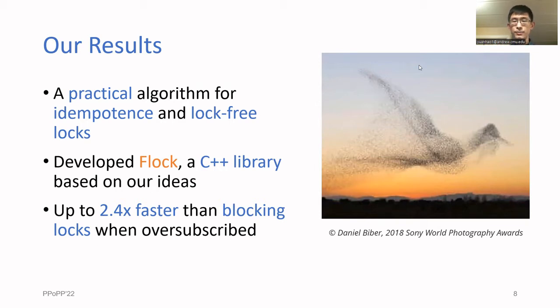We experimentally compared these two and found that the lock-free version is up to 2.4 times faster than the blocking version in oversubscribed situations. Without oversubscription, the two are about the same. We also compared the lock-free version with state-of-the-art lock-free data structures and found that they were competitive.